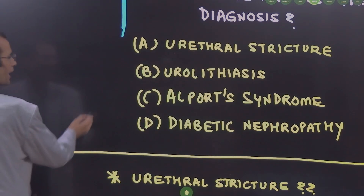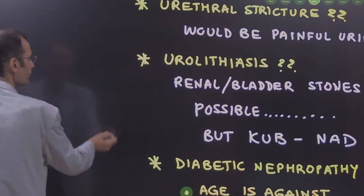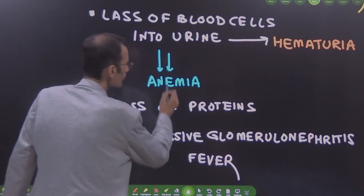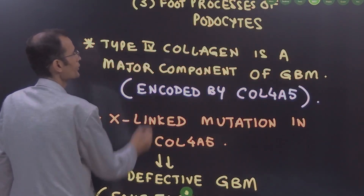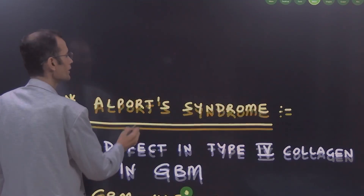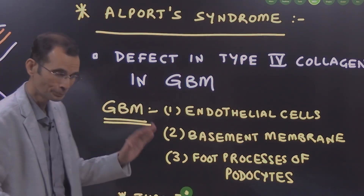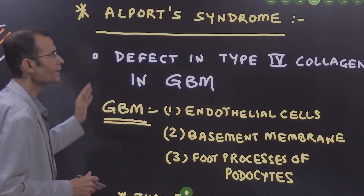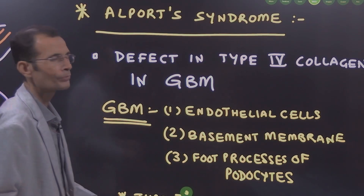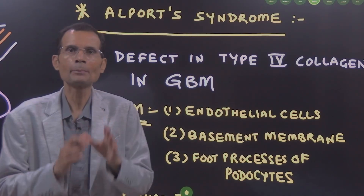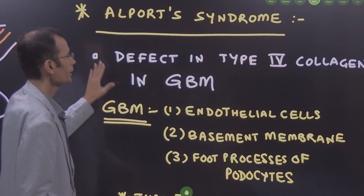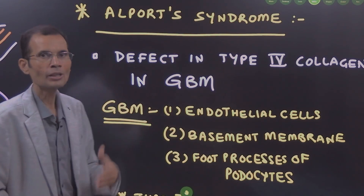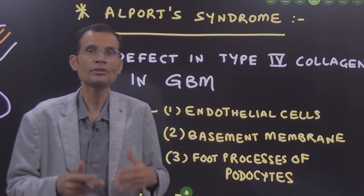Let us understand Alport syndrome in detail. In Alport syndrome, there is a defect in type 4 collagen in the glomerular basement membrane. It is fundamentally a defect of collagen.